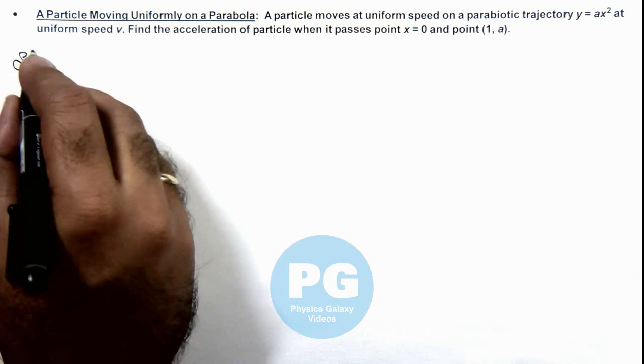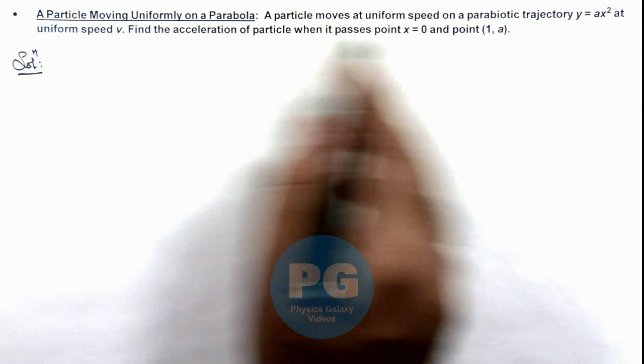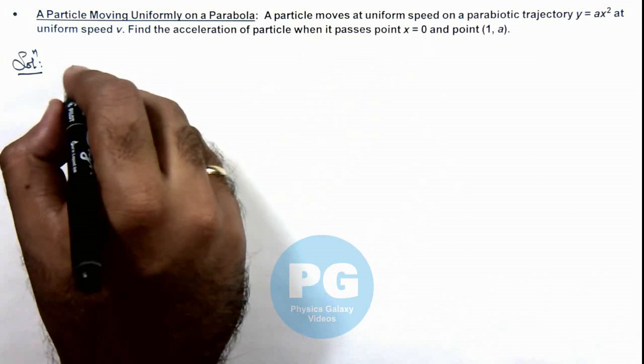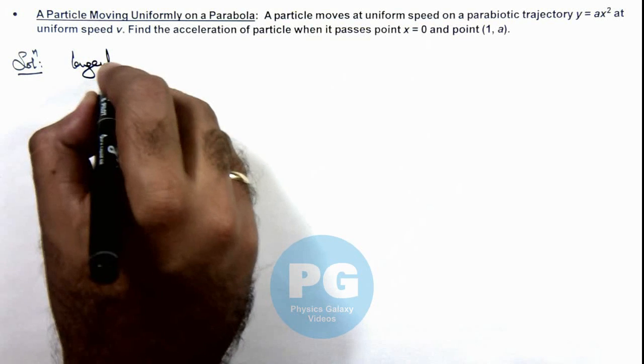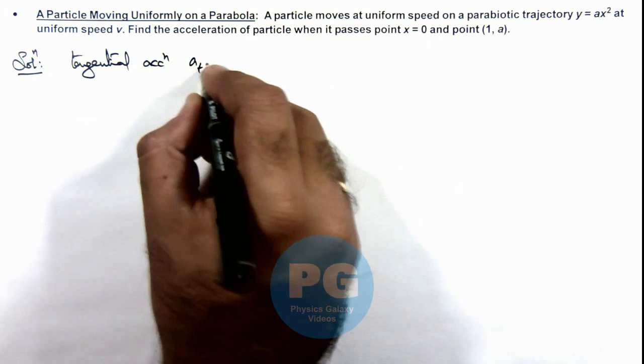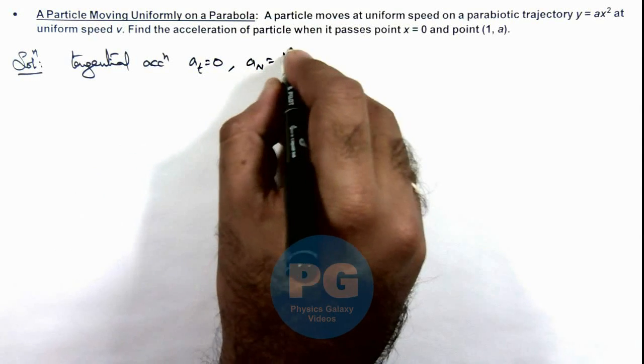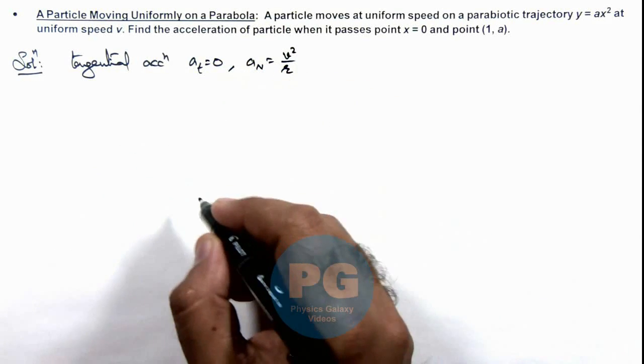We can directly see that the particle is moving uniformly at uniform speed. Then we can directly write the tangential acceleration of particle aₜ = 0, and normal acceleration can be written as v²/r, as v is uniform.